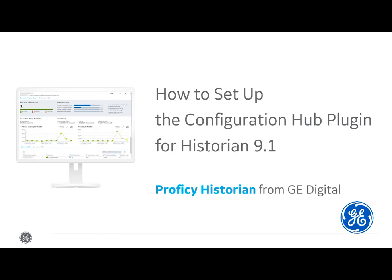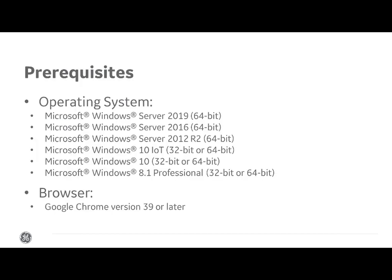Configuration Hub is a web application that allows you to manage historian systems and their components. Hi, I'm Swati, an information developer at GE Digital. I'm going to show you how to install the required components and get started with Configuration Hub in Historian 9.1. Let's begin.